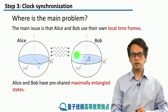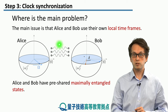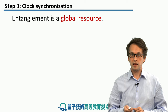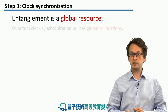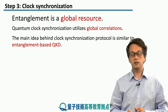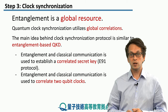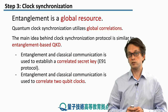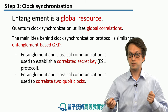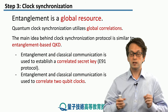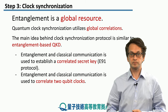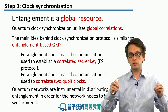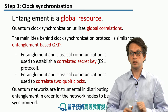What they can do is share entangled pairs of qubits and use these qubits to establish a global time frame — entanglement is used as a global resource. We saw a similar scenario in entanglement-based QKD: in the E91 protocol, entanglement and classical communication are used to establish a correlated secret key between Alice and Bob. In qubit clock synchronization, we use the global correlations present in a maximally entangled state to establish a global time frame and correlate the two qubit clocks, thereby synchronizing them. Quantum networks are instrumental in distributing bipartite entanglement, allowing the various nodes in the network to synchronize their clocks and establish a global time frame.